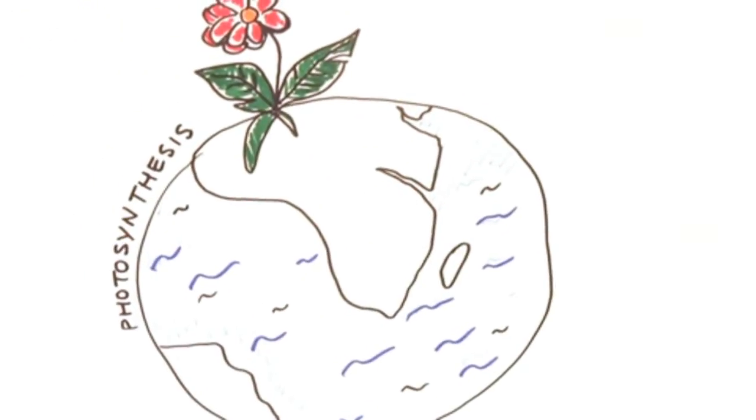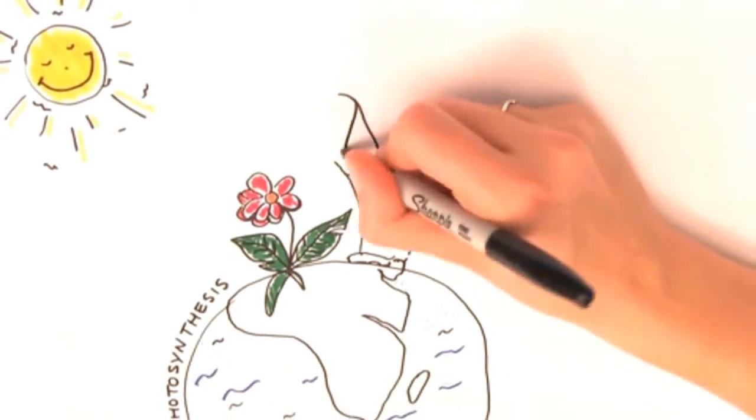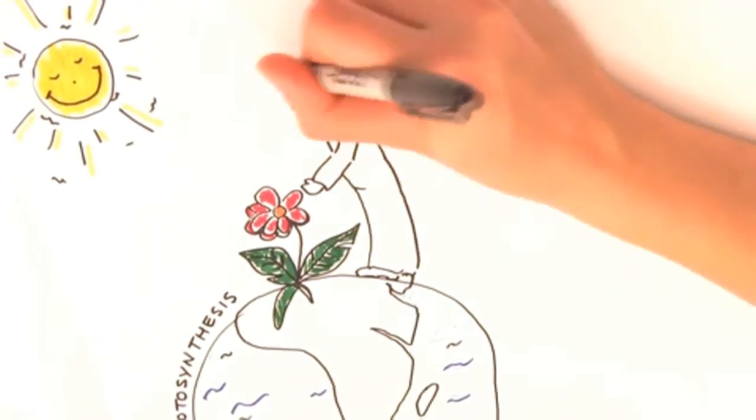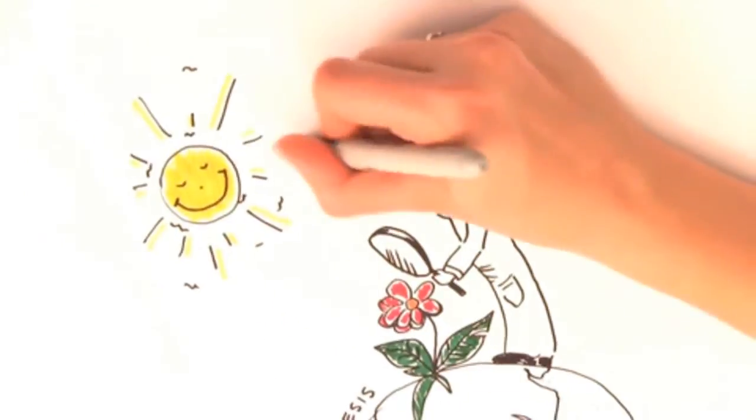In photosynthesis, a plant absorbs photons from the sun and uses them to grow. Photons are tiny particles of light, and to see what's going on when they're absorbed, we need to take a closer look.